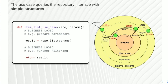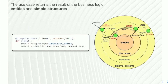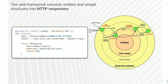The use case has results and sends them back to the web framework. The web framework knows about entities — so the result can still be an entity, a model I created. The web framework's task is to convert those entities into something understandable outside, for example JSON. My use case doesn't know anything about JSON — it's okay with entities, because that's part of my business. This is the journey of the data in a clean architecture.